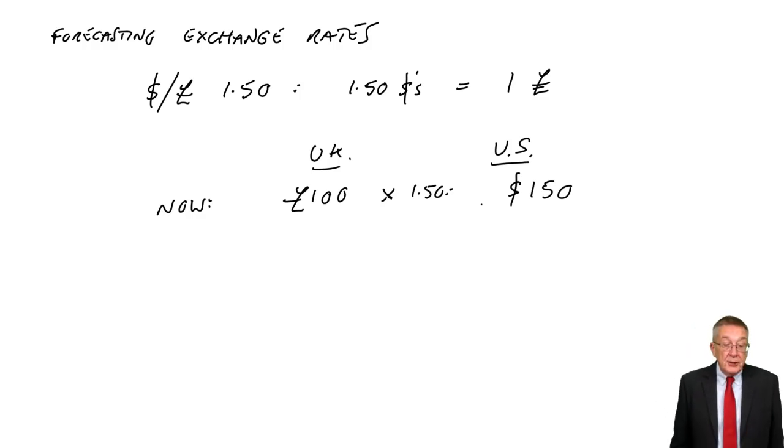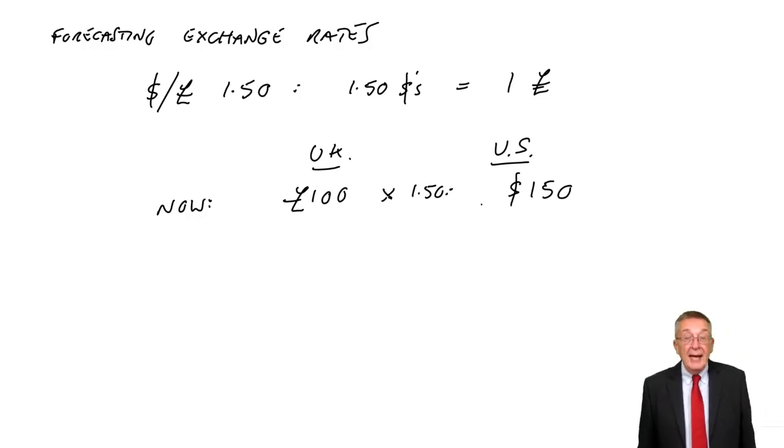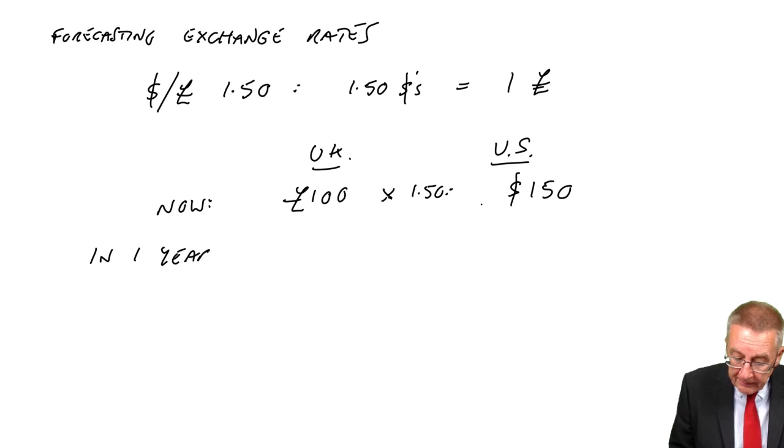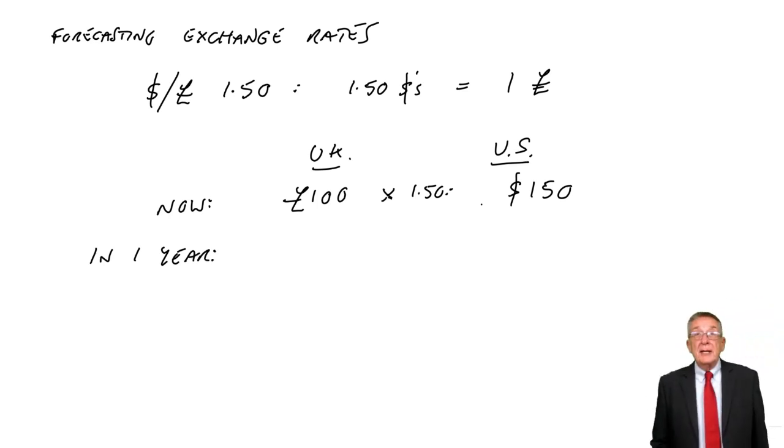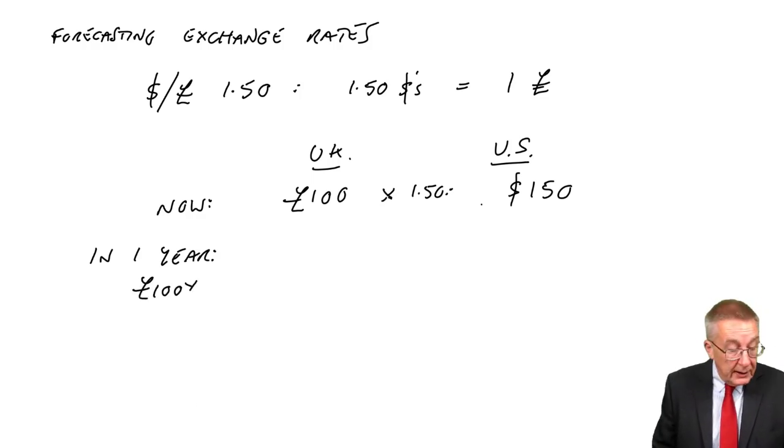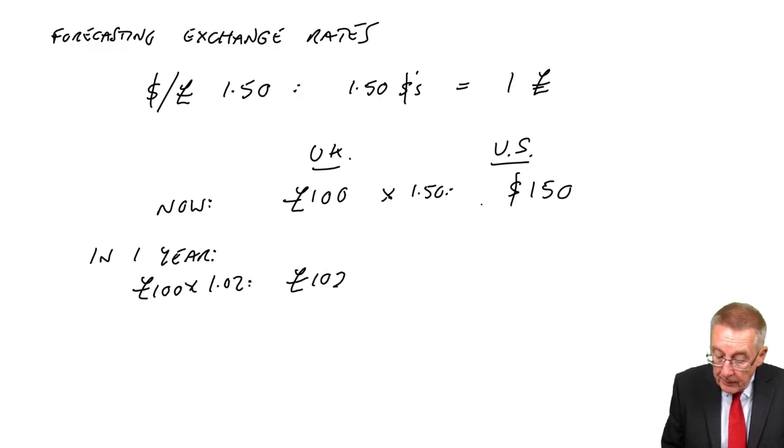It says there's inflation at 2% in the UK and 4% in the US. So in a year's time, what would we expect the price to have changed to? In the UK, it's currently 100. With inflation at 2% in the UK, multiply by 1.02, the pound price will have gone up to 102.